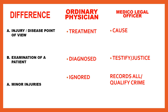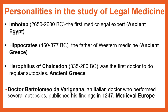Personalities in the study of legal medicine: Imhotep, 2650–2600 BC, is known as the first medical-legal expert. He was also the chief justice and personal physician of Pharaoh Zoser in Egypt. Egyptian physicians regard him as the founder of Egyptian medicine. He was the author of medical treaties containing anatomical observations, illnesses, and cures.